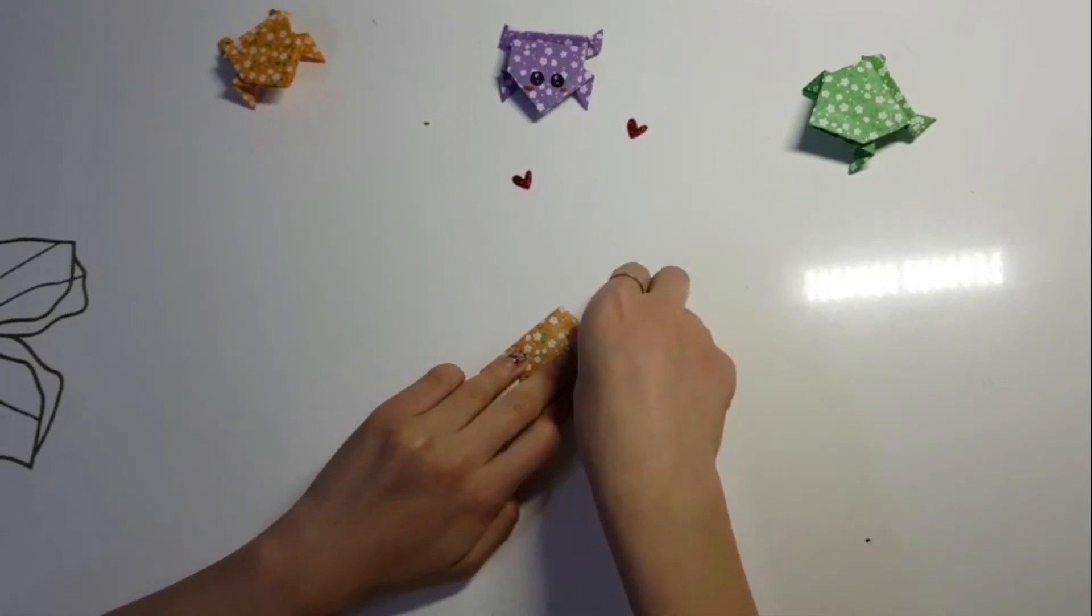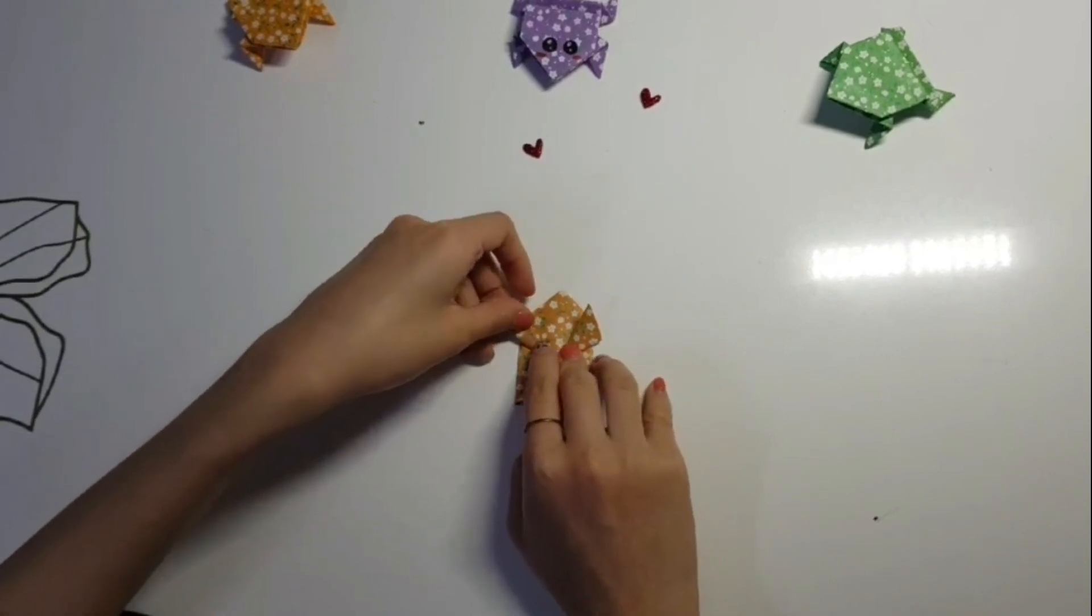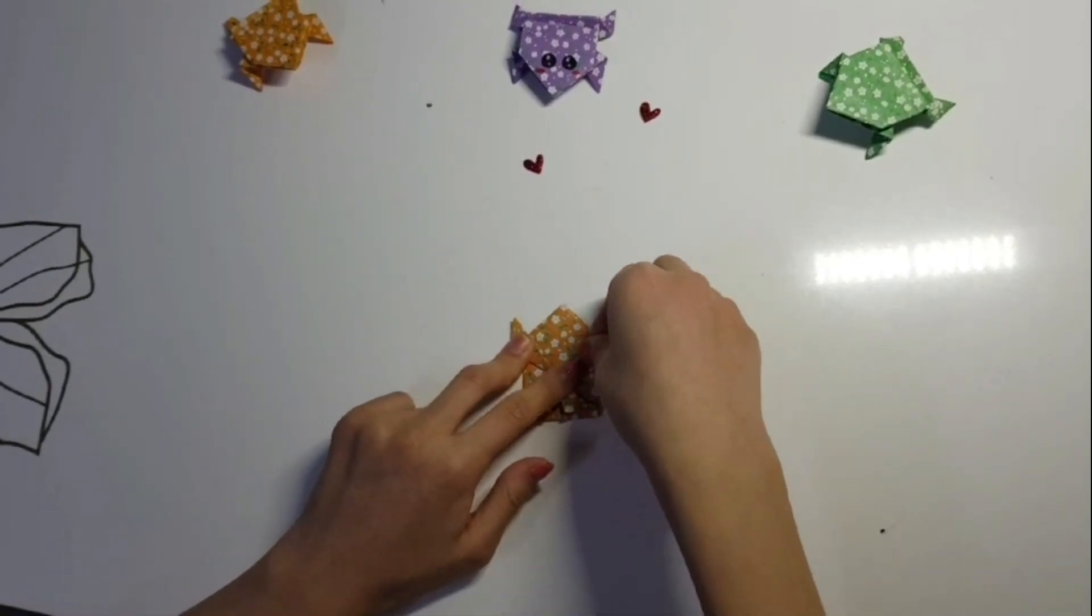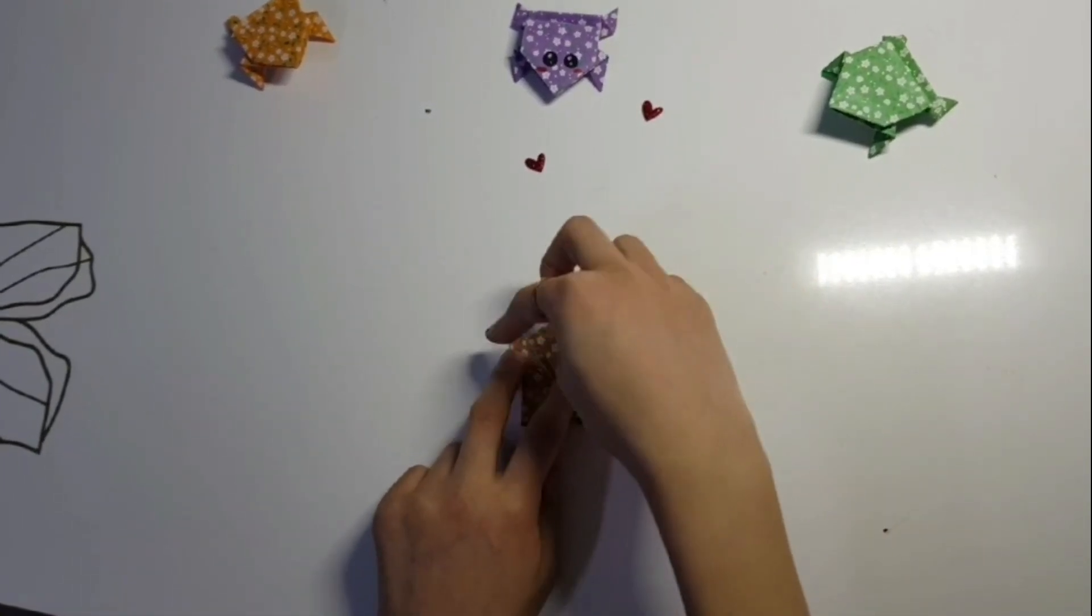After, we make the frog legs by taking the sides and folding it where you want it, but just remember that it needs to match up with the other leg.